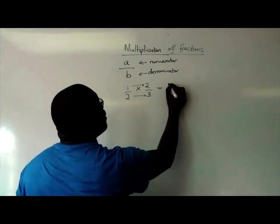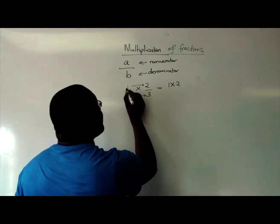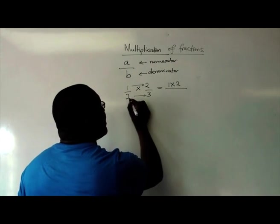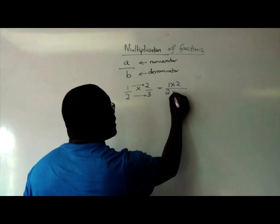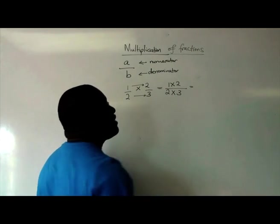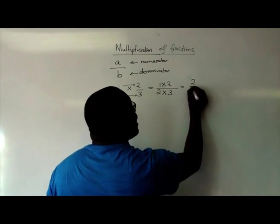So in this case, it would be 1 times 2, the numerator times numerator divided by denominator times denominator is 2 times 3. So your answer would be 2 out of 6.